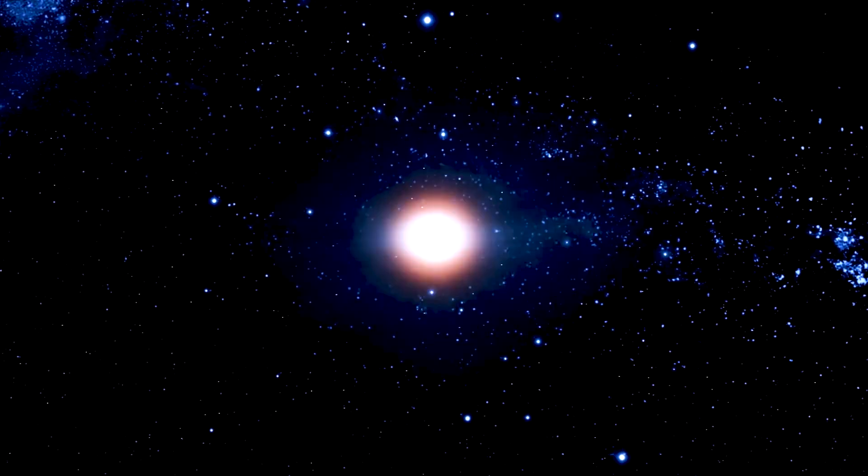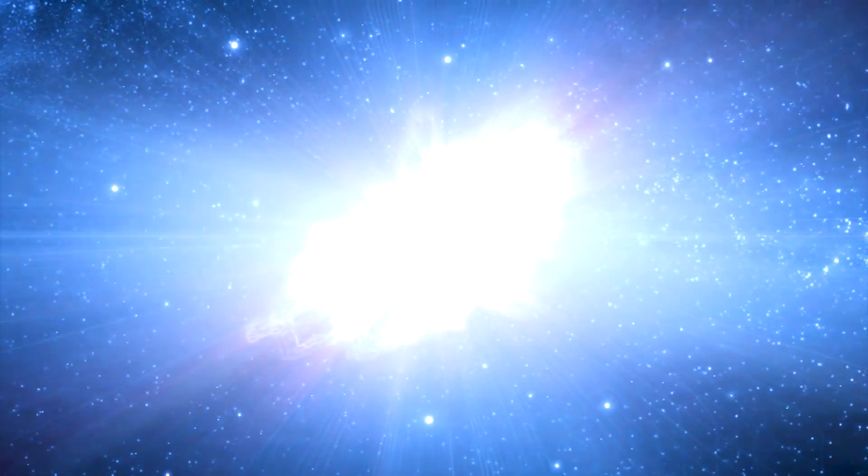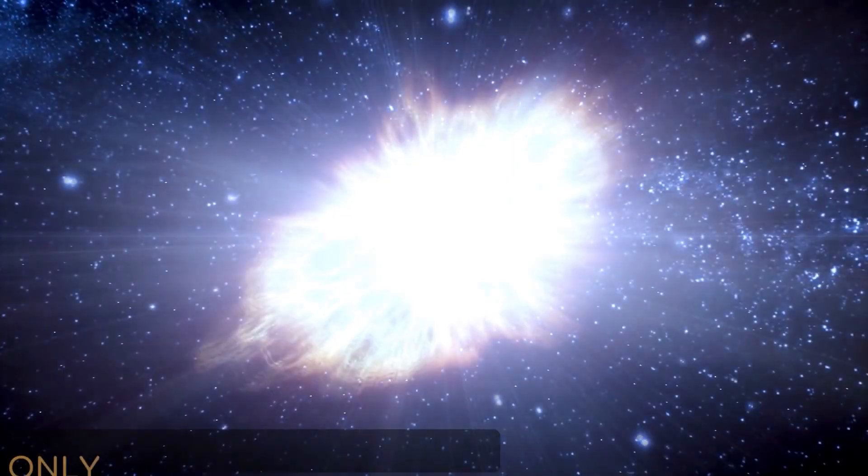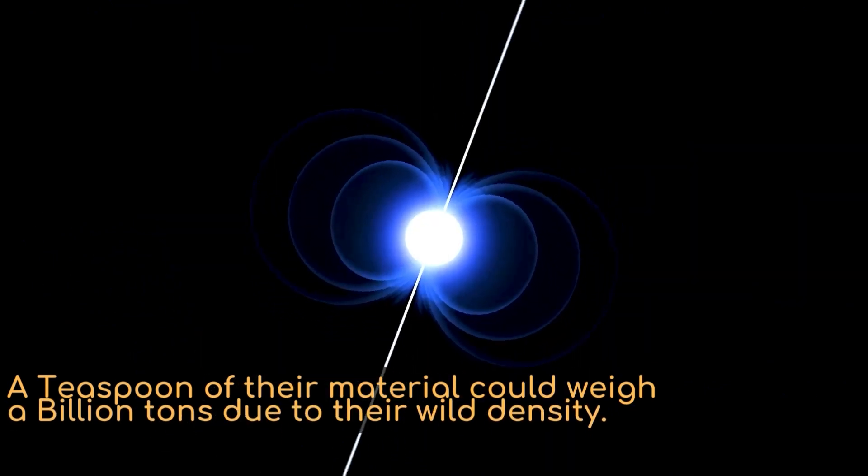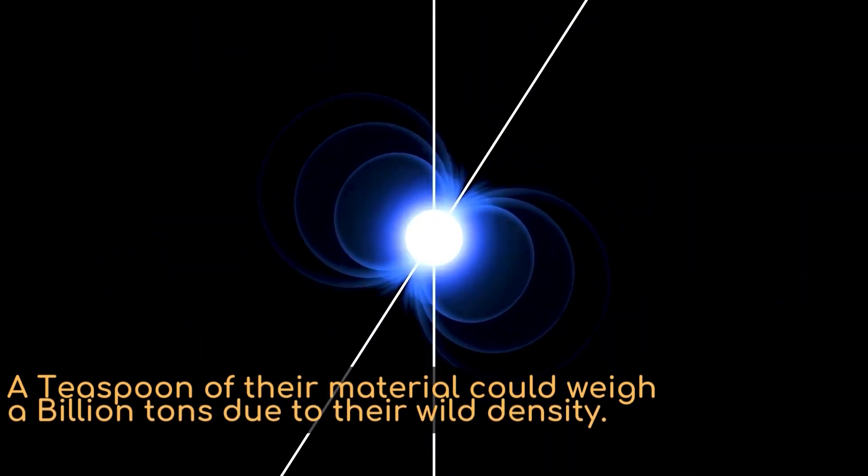Neutron stars are the result of explosions, and when a supernova explodes, it sometimes leaves behind neutron stars. These stars are 1.4 times denser than the Sun, but are only 12.4 miles in diameter, and a teaspoon of their material could weigh a billion tons due to their wild density.